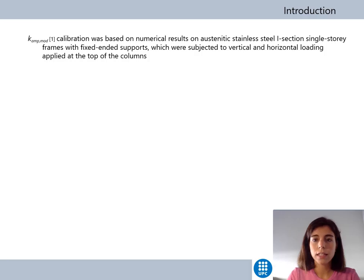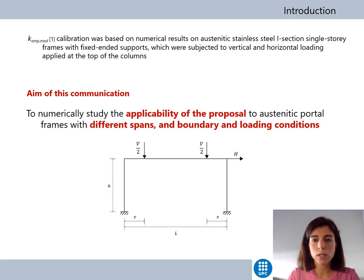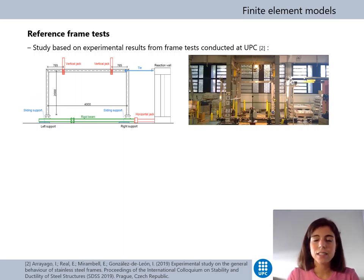Recently, the Imperial College team has extended this plastic design method to more complex frames and types of stainless steel. But at the time of submission of this communication, the assessment of the approach was based on numerical results of austenitic stainless steel I-section single-story frames with fixed-ended supports and loadings applied at the top of the columns. Therefore, this study aims to extend the numerical analysis to austenitic portal frames with different spans, boundary and loading conditions, and to study the applicability of the proposal by calibrating the y-factor.